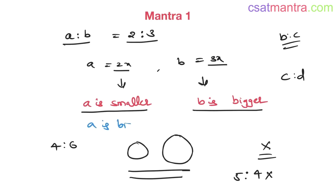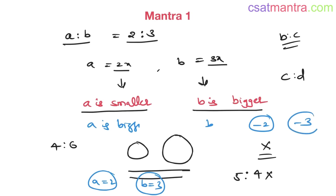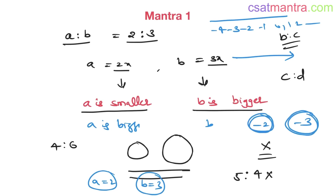If you take x as negative, everything would be reversed — a would be bigger and b would be smaller. For example, if x is 1, a equals 2 and b equals 3, so b is bigger. But if x is minus 1, a is minus 2 and b is minus 3. On the real number line, minus 2 is bigger than minus 3, so a would be bigger and b would be smaller in that case.